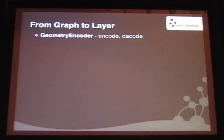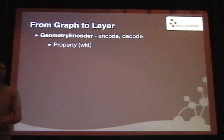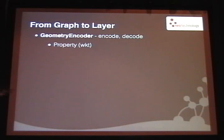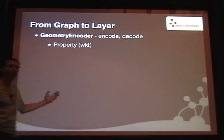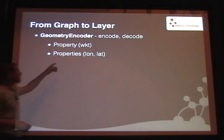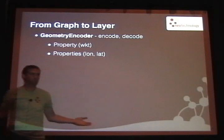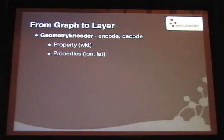A geometry encoder is how you construct a layer in this system. You provide Neo4j Spatial with a method for getting from a graph traversal to a geometry. A very easy one is to take one property of your dataset that contains well-known text, and your encoder gives that back as the geometry. But that's not very graph-like since the information is denormalized. A better approach is to have a number of properties — for a simple point geometry, longitude and latitude can construct a point.